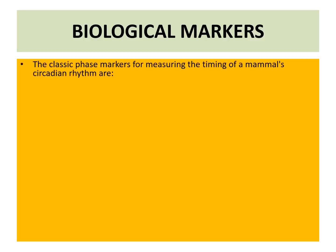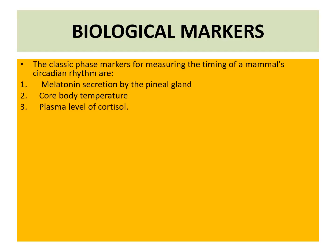Biological markers: these are classical phase markers for measuring the timings of a mammal's circadian rhythms. They are melatonin secreted by the pineal gland, core body temperature, and very importantly, plasma level of cortisol.